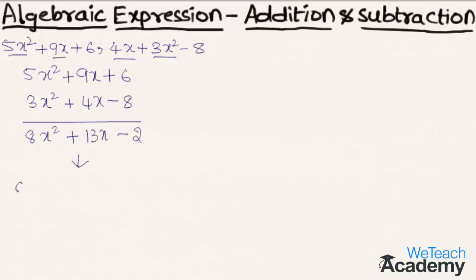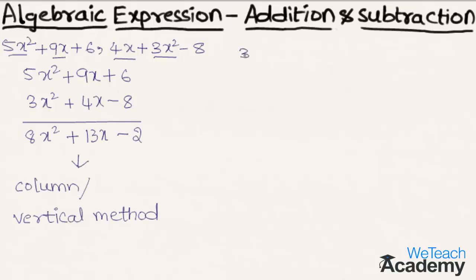We call this method the column or vertical method. Now let us consider another example. Here we have the first expression as 3x² plus 5x minus 4, and the second expression is 6 plus 6x².